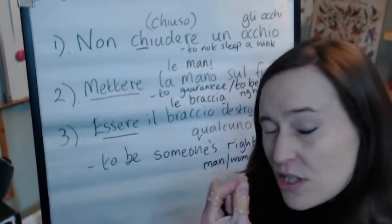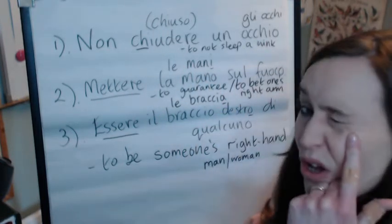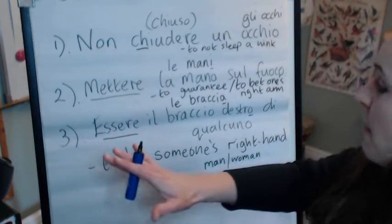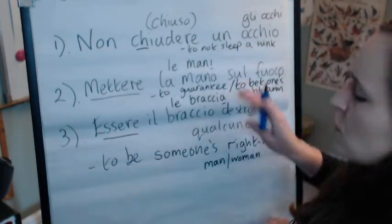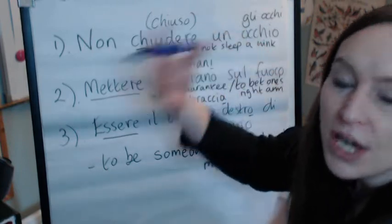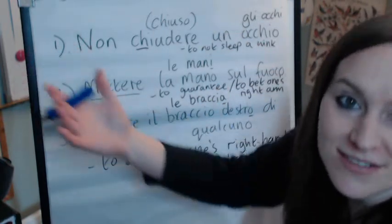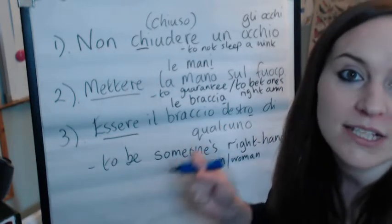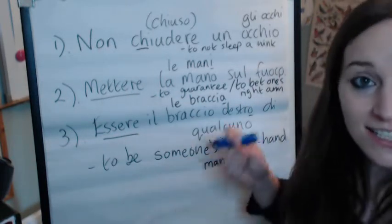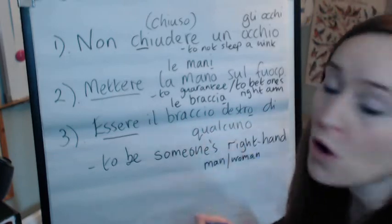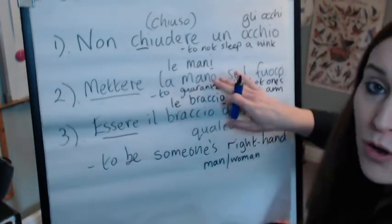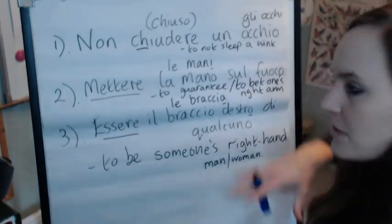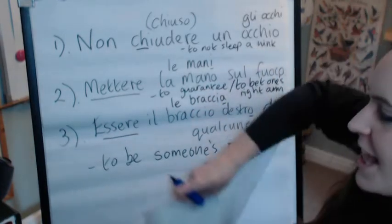Chiudere means to shut or to close. Un occhio becomes gli occhi, and mettere la mano sul fuoco means to guarantee something or to be certain of somebody — you could say 'I bet my right arm on it' in English. Ci metto la mano sul fuoco, and la mano becomes le mani in the plural.